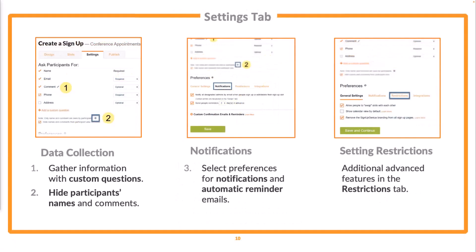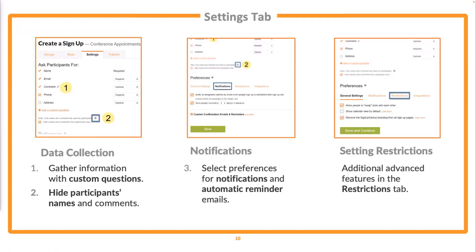The third step is the settings tab, where you will set some preferences. Do you want to gather information? You can ask a custom question, maybe the student's name or any concerns. Privacy is very important — if you don't want the names of the parents who signed up for appointments to show, click this gear icon and select to hide the names and comments from participant view. When you're logged in you have permission to see those names, but to the general public it will just say slot filled.